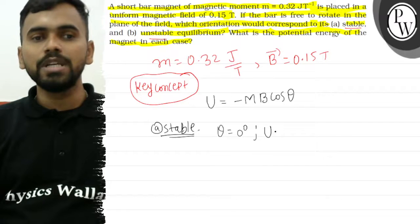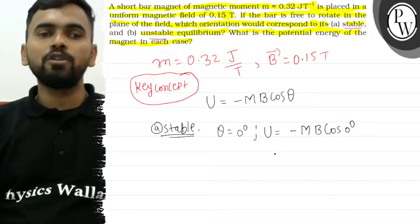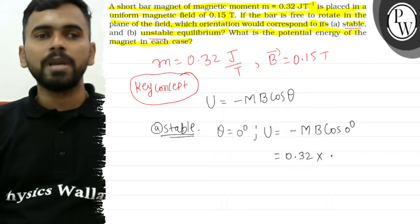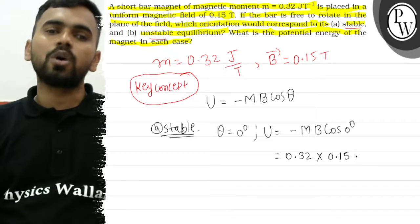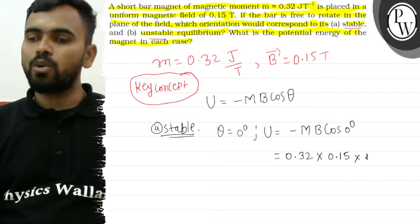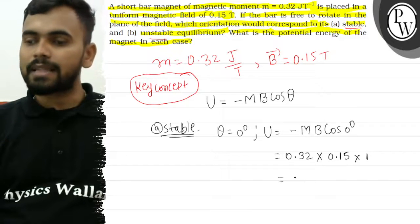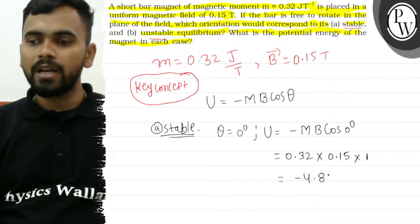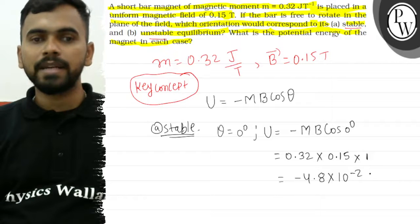For stable equilibrium at theta equals 0 degrees, U equals minus mB cos 0. With m value 0.32 and B value 0.15, this equals minus 4.8 times 10 to the power minus 2 joules.